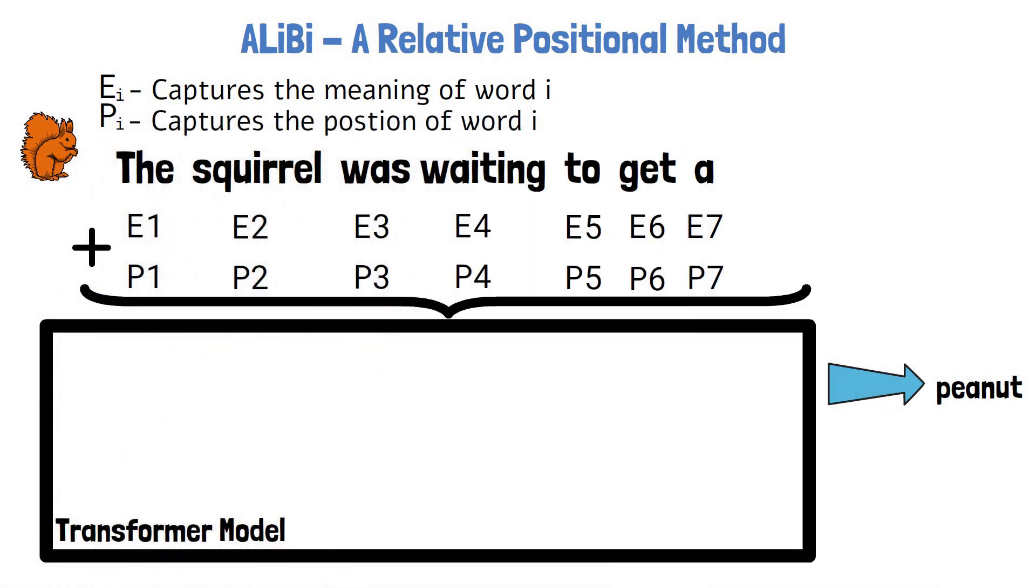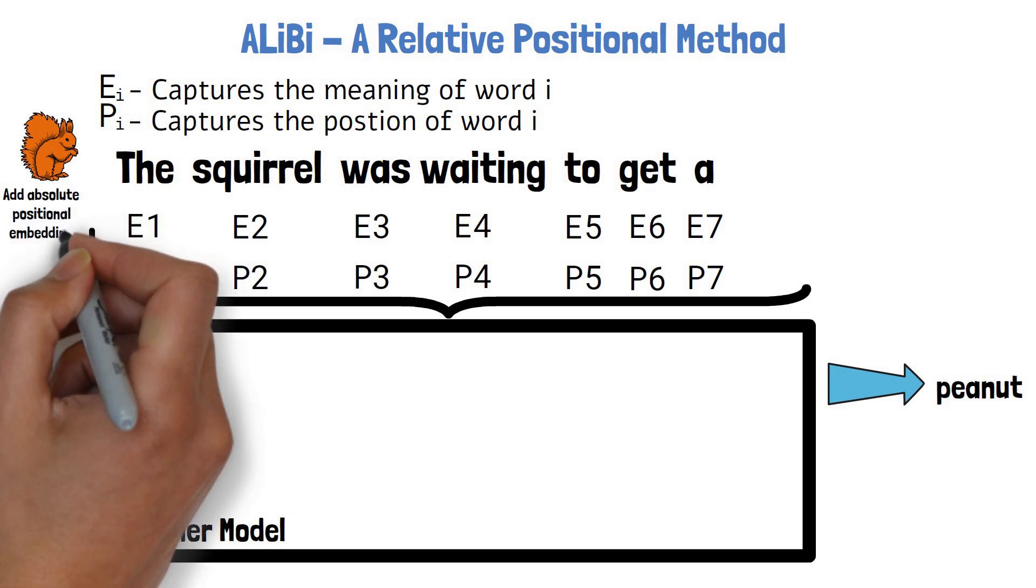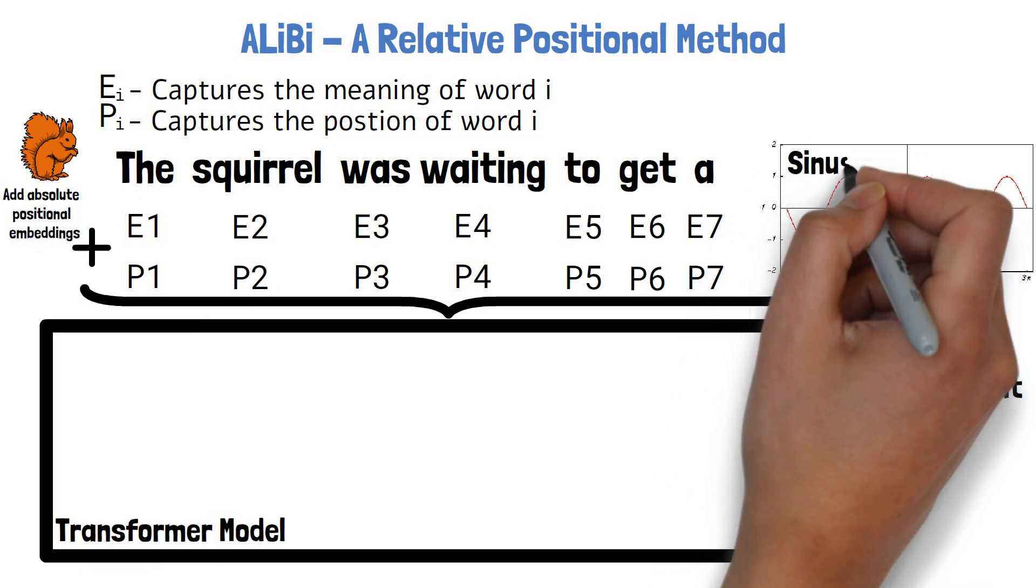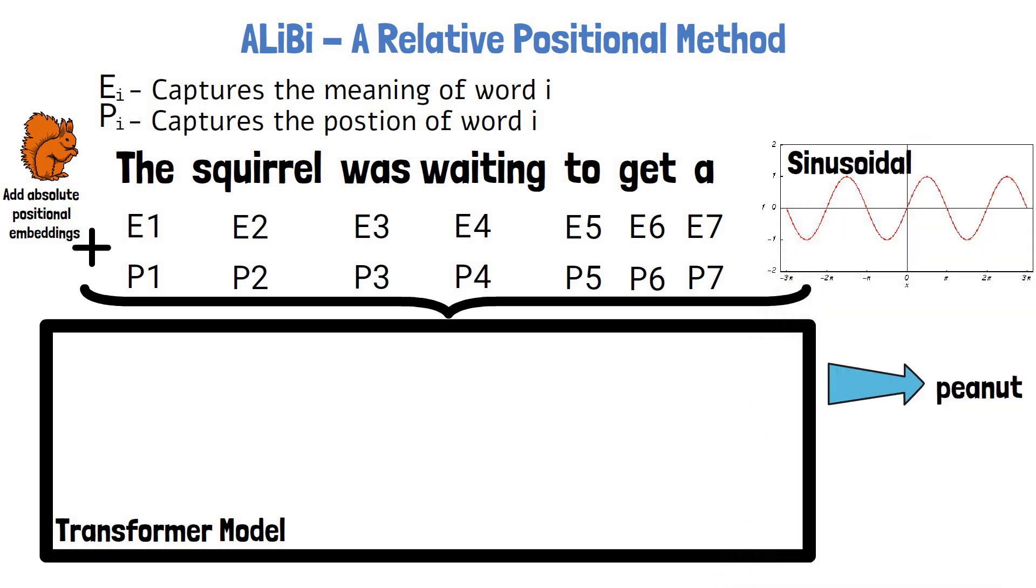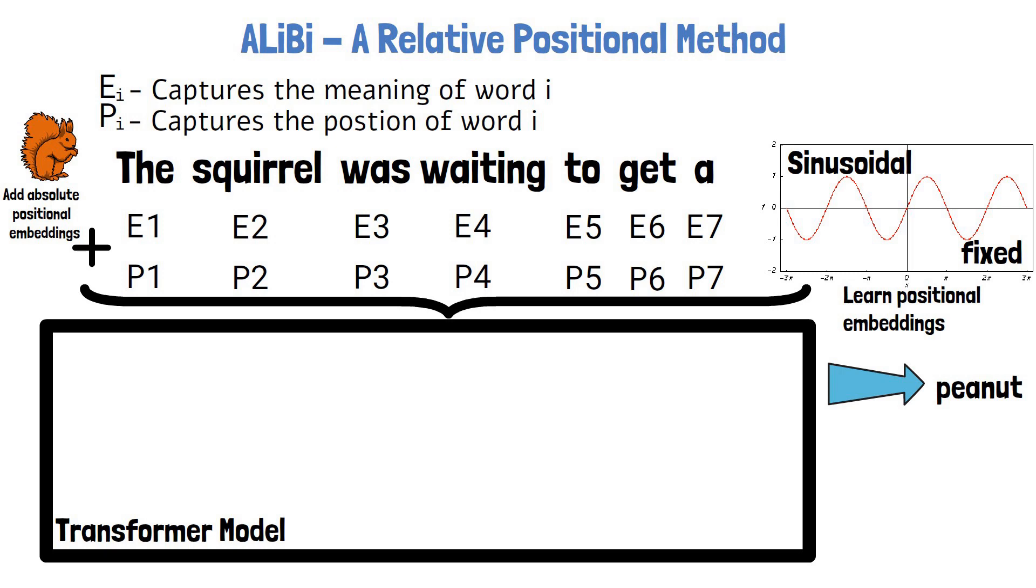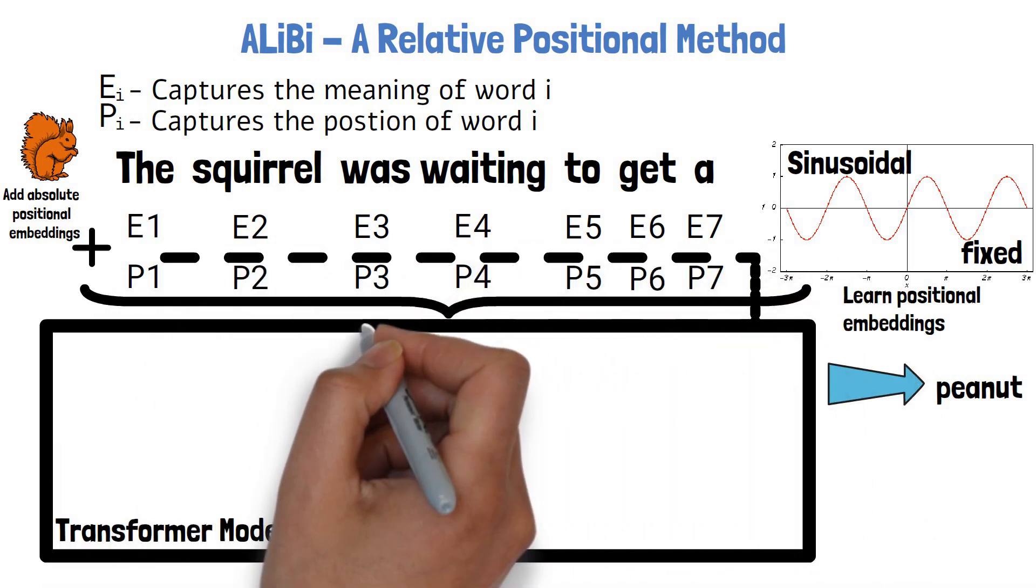In order to sort of force it to be aware of the word position in the input sequence, a common approach is to add absolute positional embeddings. The original method is called sinusoidal position embeddings, which we won't dive into in this video, but important note is that these embeddings are fixed and not learned by the model. Another approach is to train positional embeddings, meaning to let the model learn them as part of the training.